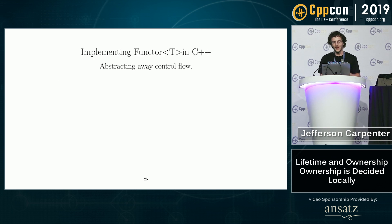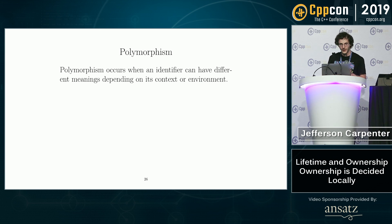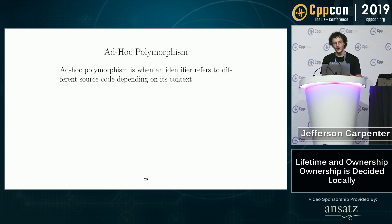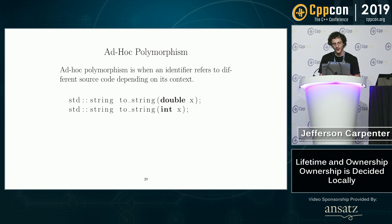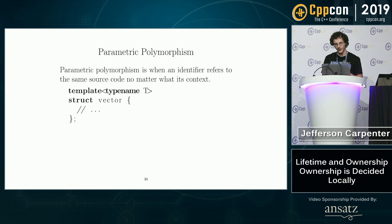Now let's implement some functors in C++, abstracting away control flow. First, I'd like to define polymorphism: it is when an identifier can have a different meaning depending on the context or environment it's in. There are two kinds I'll go over: ad hoc polymorphism and parametric. Ad hoc polymorphism is when an identifier refers to different source code depending on its context — in C++ that's function overloads. For example, a to_string function can have a double overload and an int overload with different function bodies.